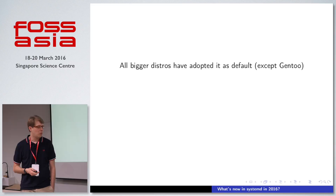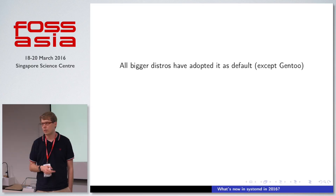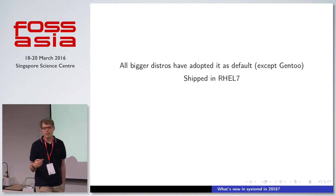Also, systemd has nowadays been adopted by all the big distributions. The one major exception that people know is Gentoo, but everything else — like all the commercial distributions like RHEL and SUSE — have adopted it, and all the community distributions like Debian and Fedora have too. So if you're running a distribution from the last year or two, you're very likely to run systemd.